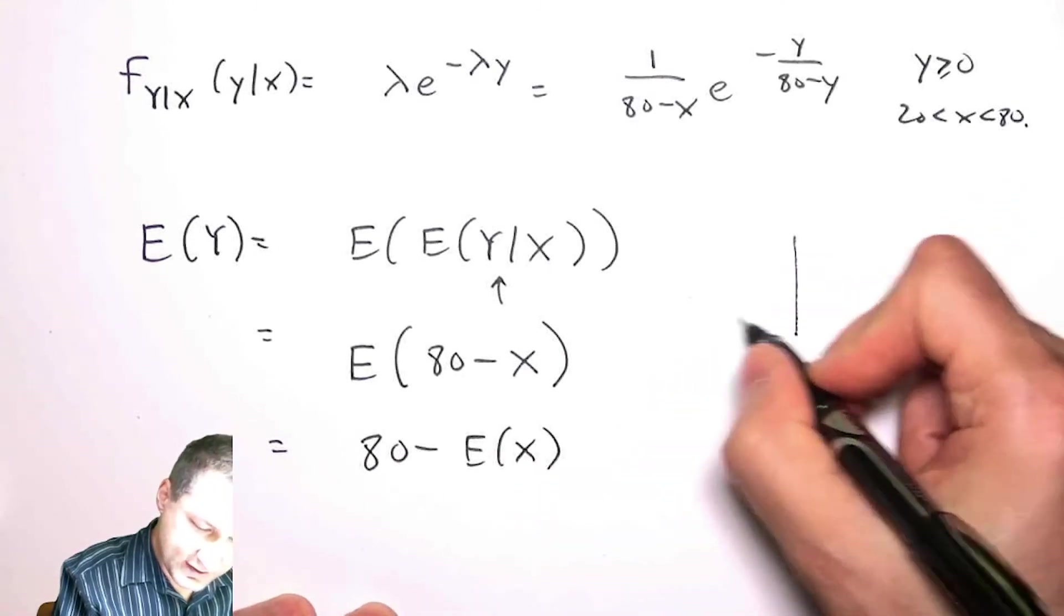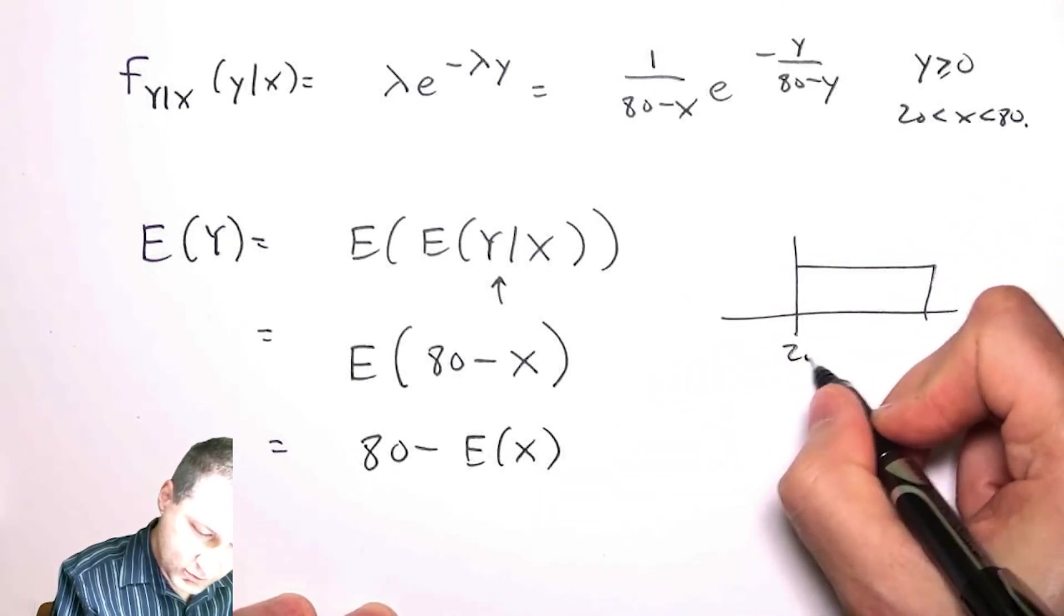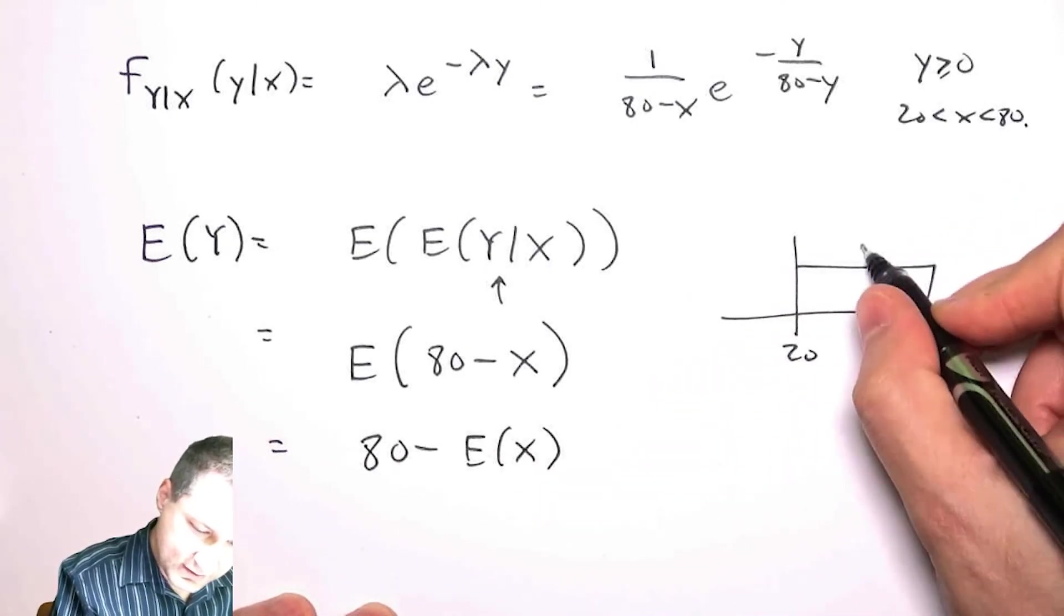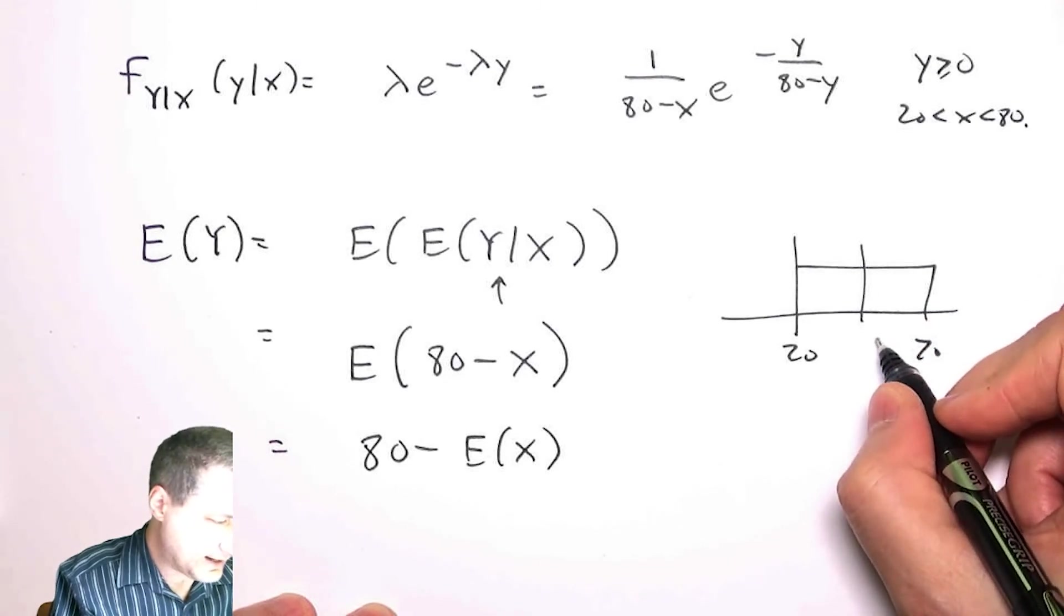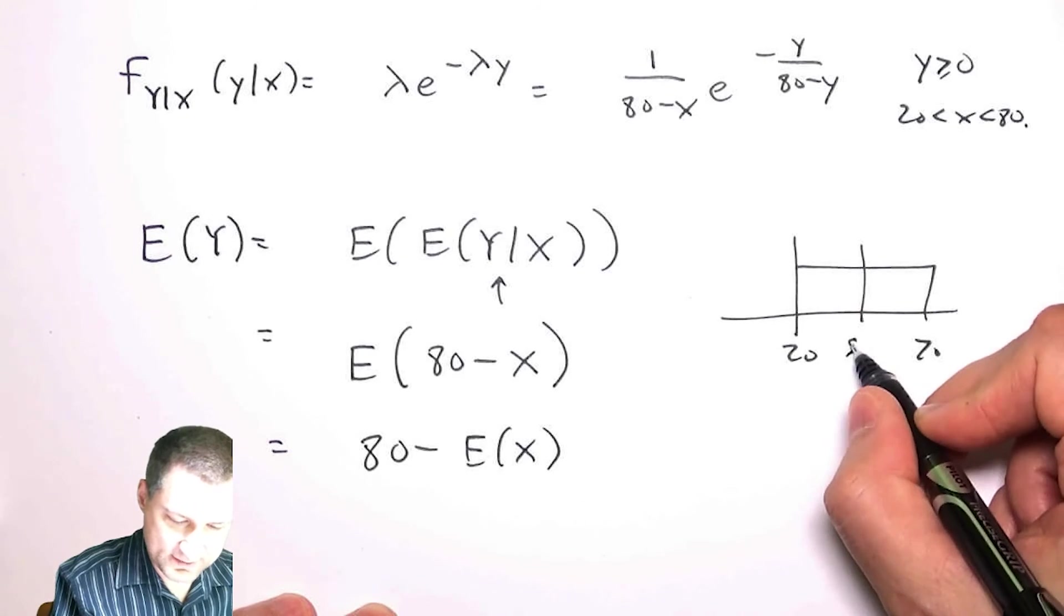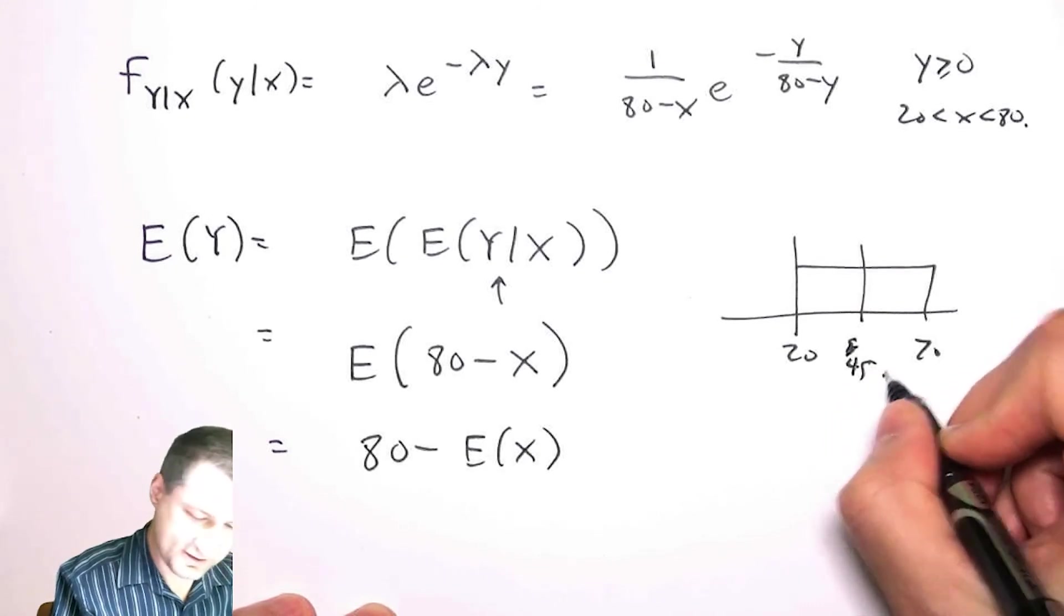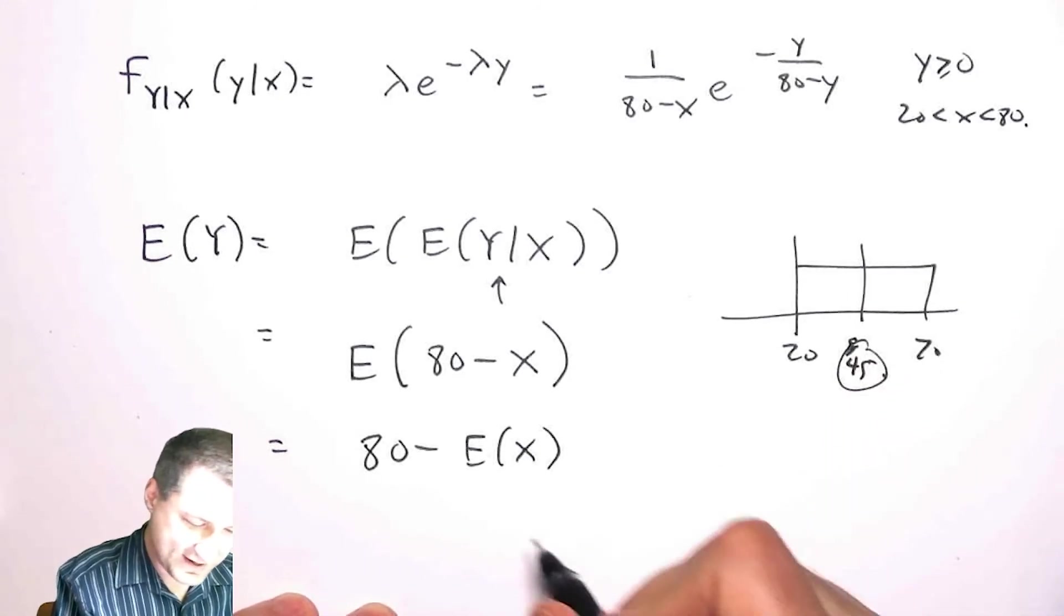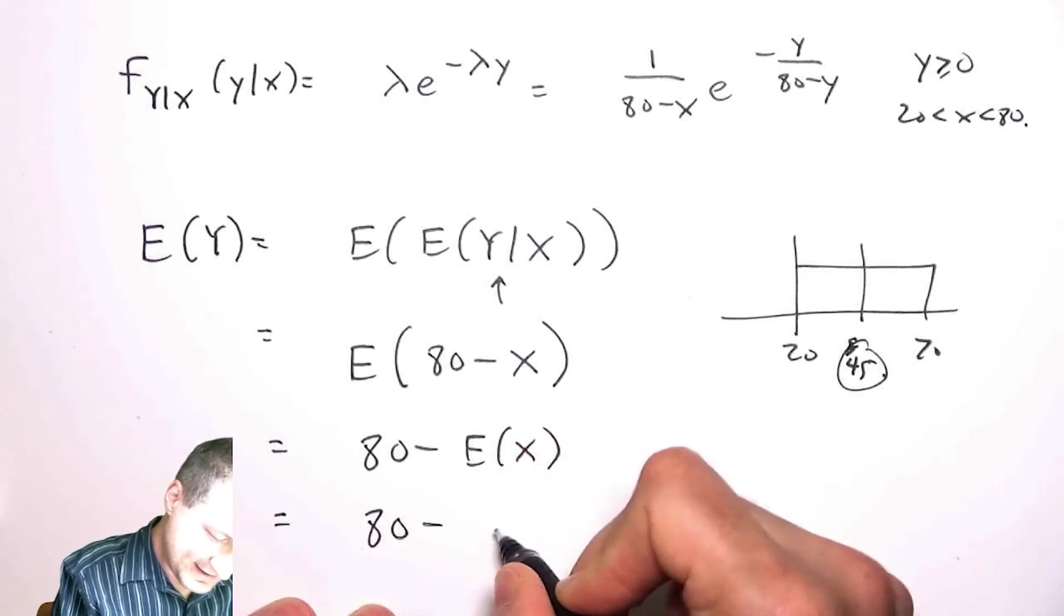And now the expected value of X, again, this is a uniform between 20 and 70. So what's in the middle? 50, no, 45. Man, I suck at math. So yes, 25 on each side, right? So, sorry.